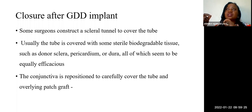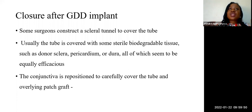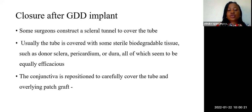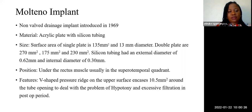Some surgeons construct a scleral tunnel to cover the tube, some may place a scleral patch graft, some create a trabeculectomy-type flap, and some may use a needle to create a tunnel for the tubing. The tube is usually covered with sterile biodegradable tissue such as donor sclera, pericardium, or dura, all of which seem to be equally efficacious. The conjunctiva is repositioned to carefully cover the tube and overlying patch graft.